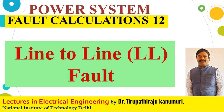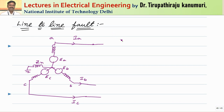Today we are going to discuss about line to line fault in the transmission system. I am taking an unloaded alternator to make the analysis easy. In that alternator, the line to line fault has happened between B phase and C phase through some fault impedance ZF.